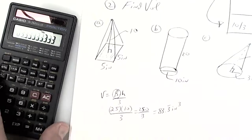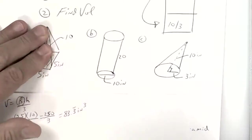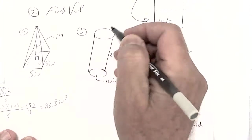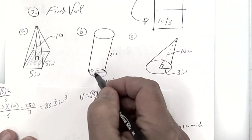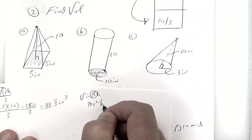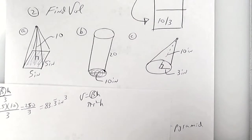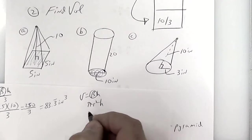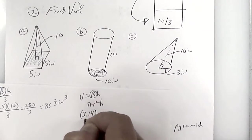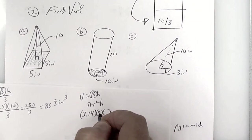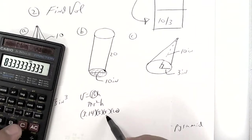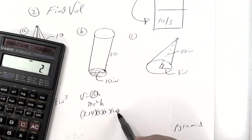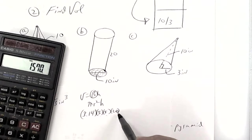The next one is a cylinder. For a cylinder you don't divide by 3, so Volume = B × H. The bottom is a circle, so it's π × radius² × H. That gives us 3.14 times the radius squared — the radius is 5, so 5 × 5 = 25 — times the height which is 20. So 25 × 20 × 3.14 = 1,570 cubic inches.